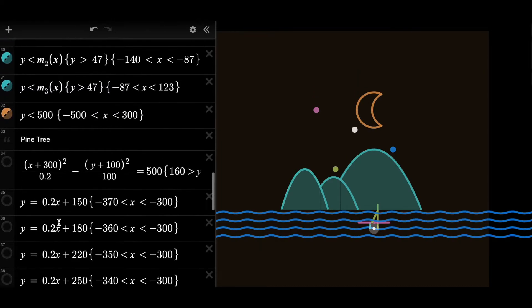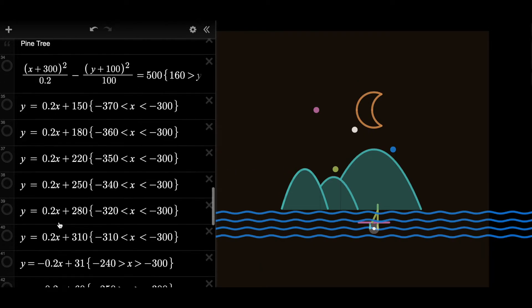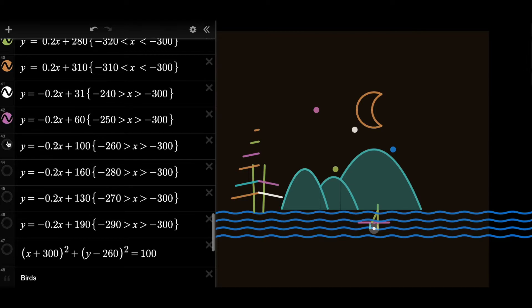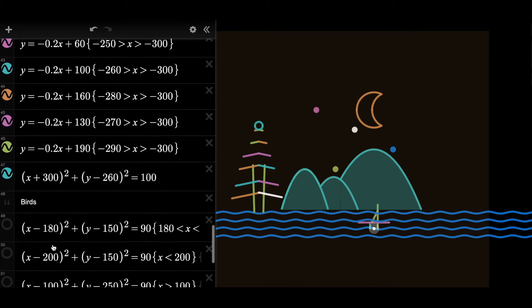And for the pine tree, I use a hyperbola first. And then just a bunch of straight lines illustrating all the branches, and then make the top, use a small circle, put in the top, illustrating a pine cone.